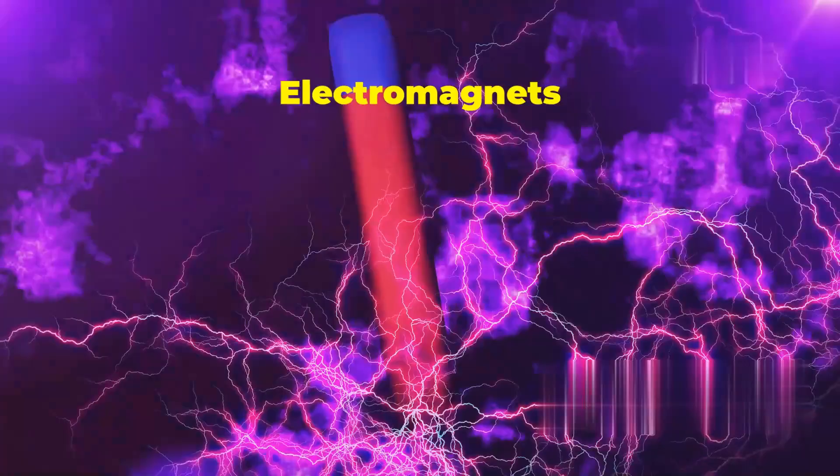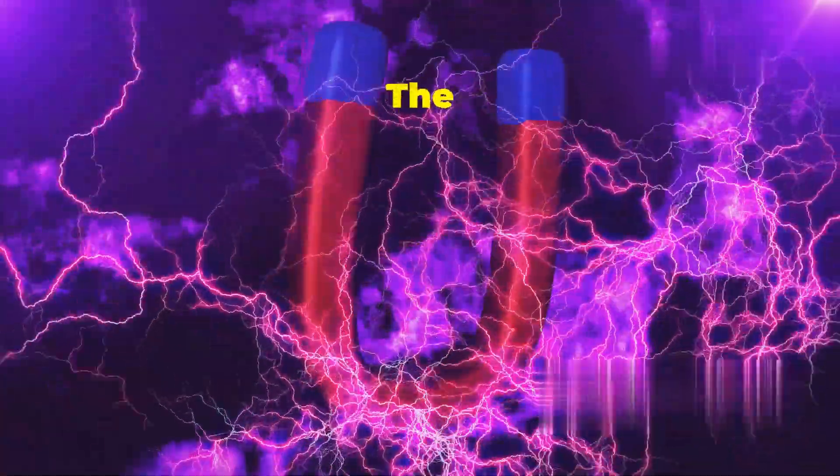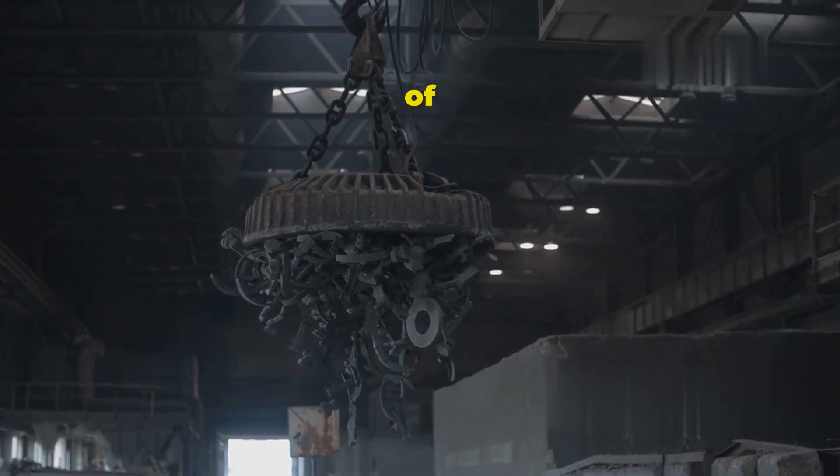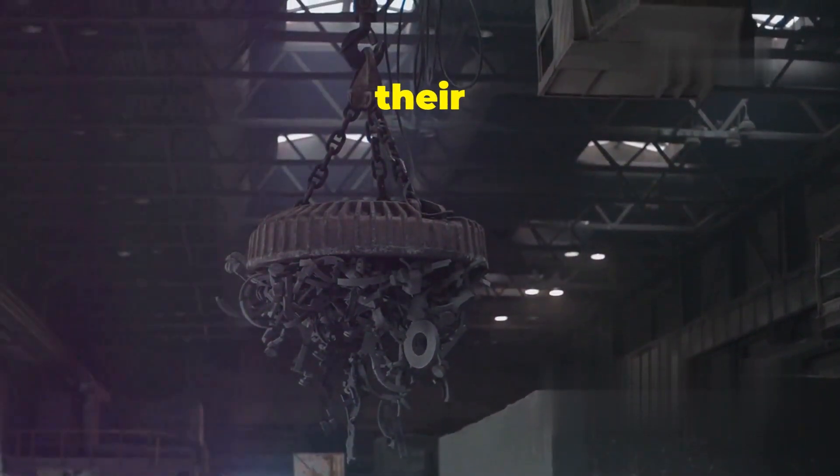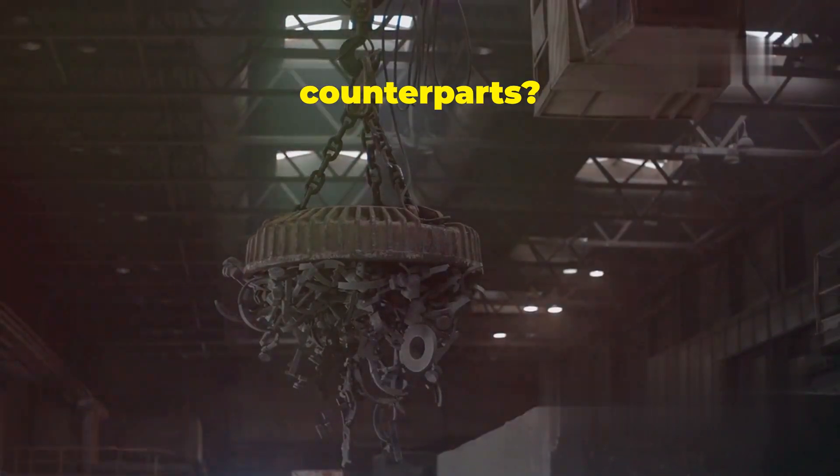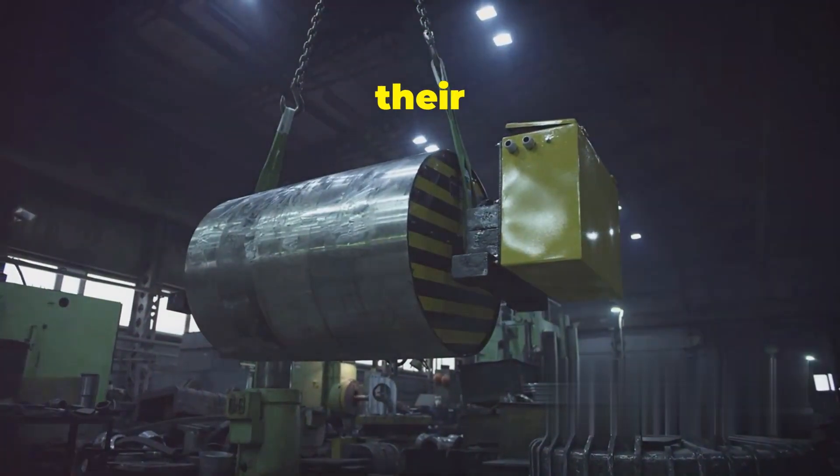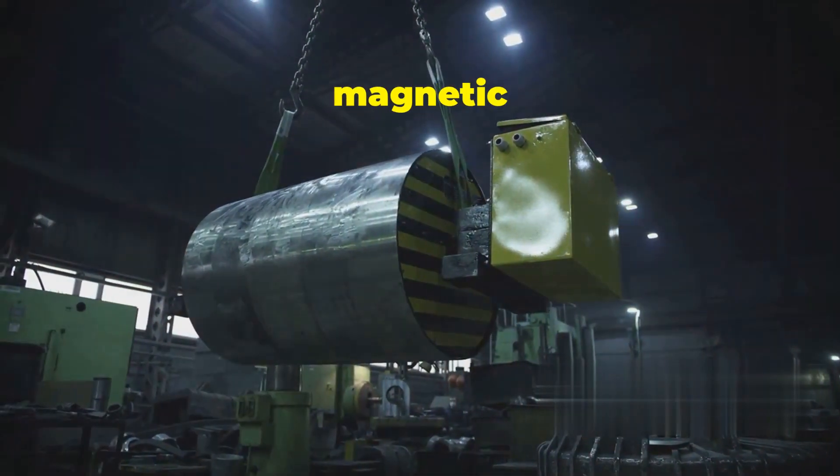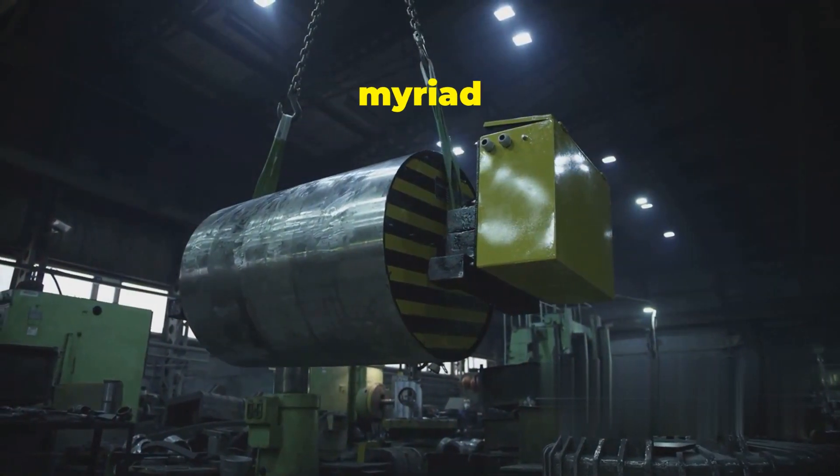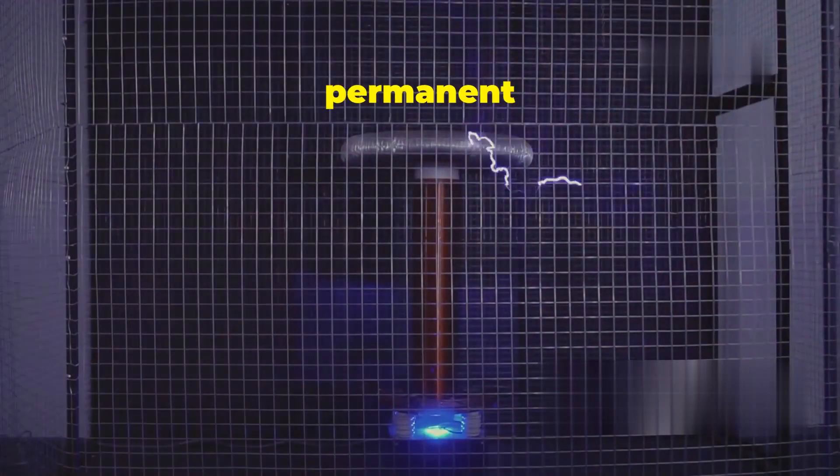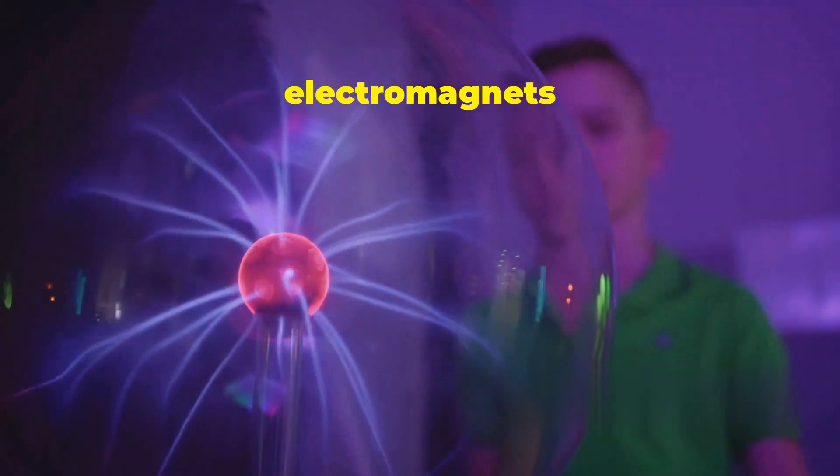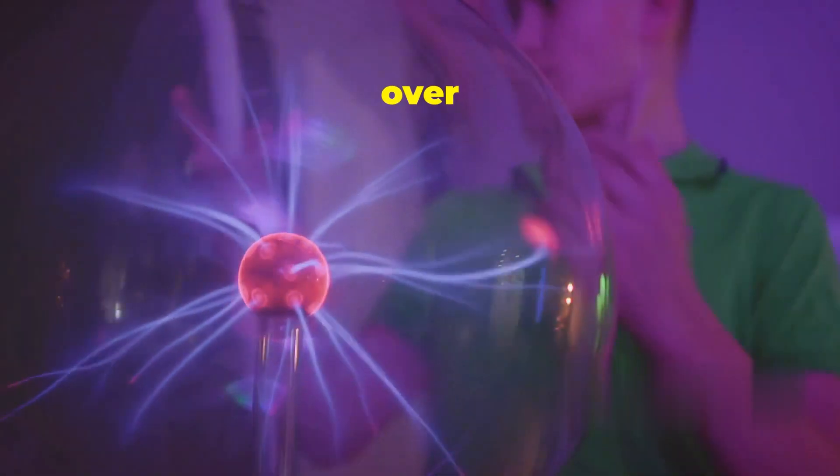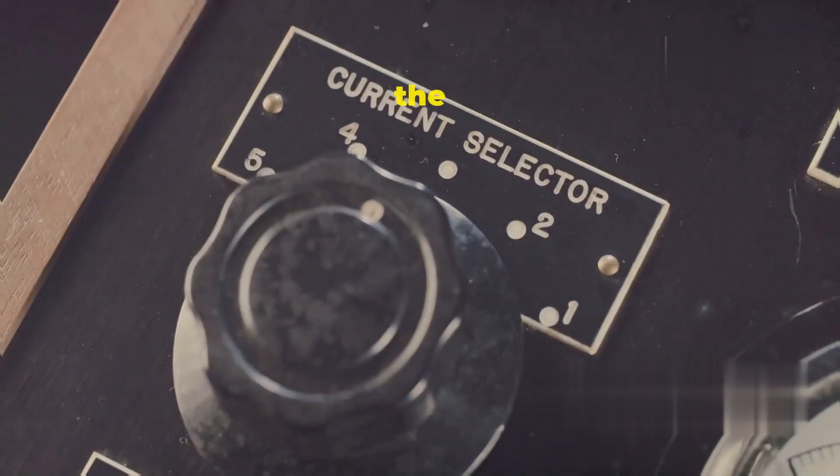Electromagnets versus Permanent Magnets: The Power of Control. We've seen the incredible versatility of electromagnets, but what makes them so advantageous compared to their permanent magnet counterparts? The answer lies in their unique ability to control their magnetic field, which opens up a myriad of possibilities. Unlike permanent magnets, which have a fixed magnetic field, electromagnets offer dynamic control over their magnetic properties. Here's the key difference.